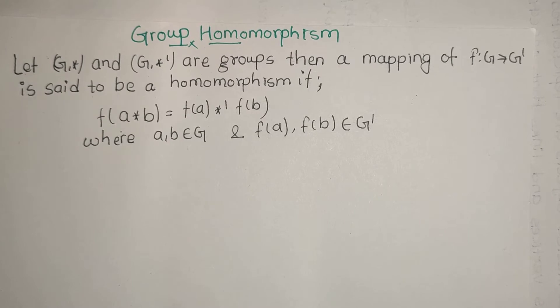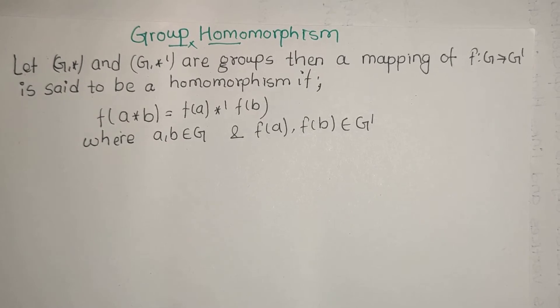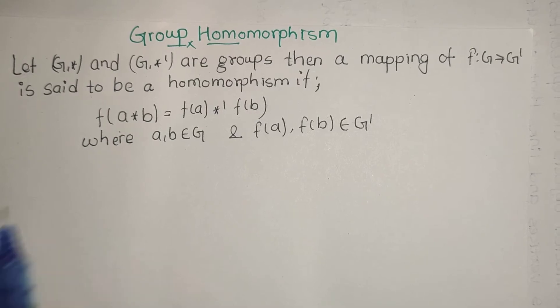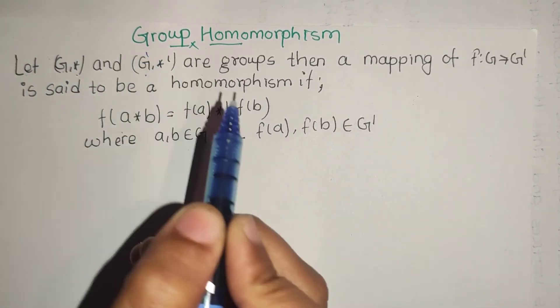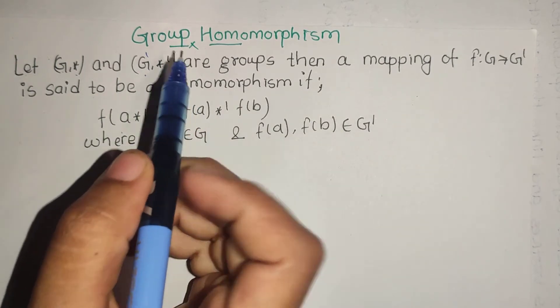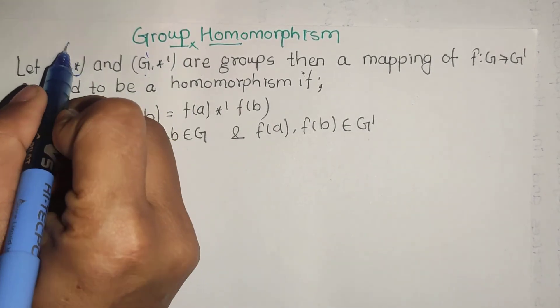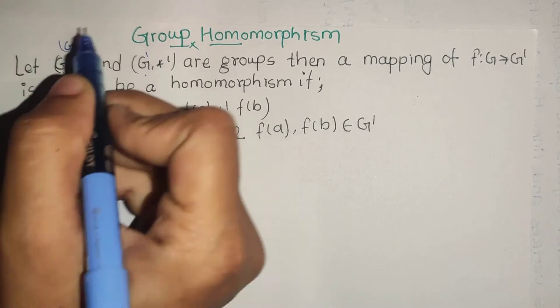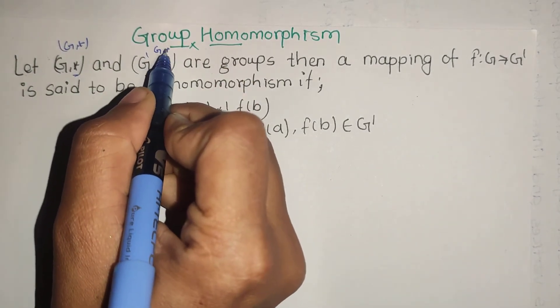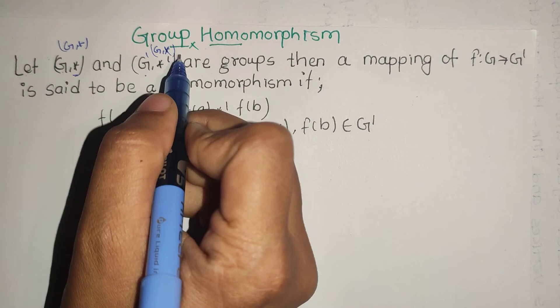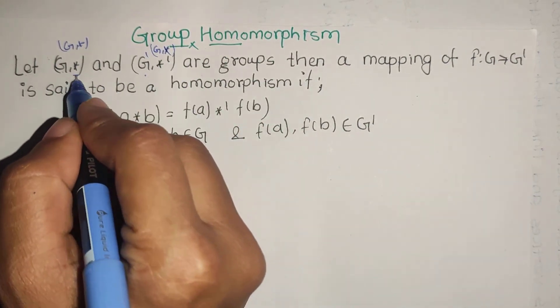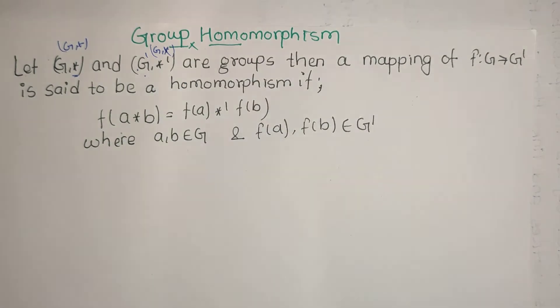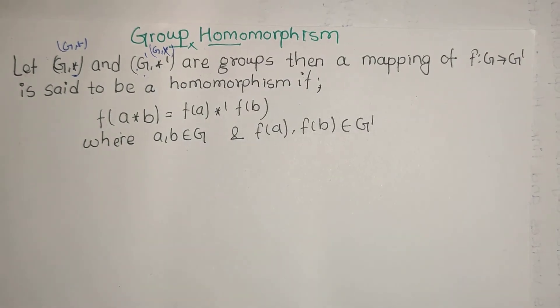First, let me explain what is homomorphism. Homomorphism means: let (G,*) and (G',*') be two groups. G has one operation and G' has another operation. The operations could be plus, multiply, or any binary operation - either same operations in both groups or different operations. G and G' are two different groups with their own binary operations.